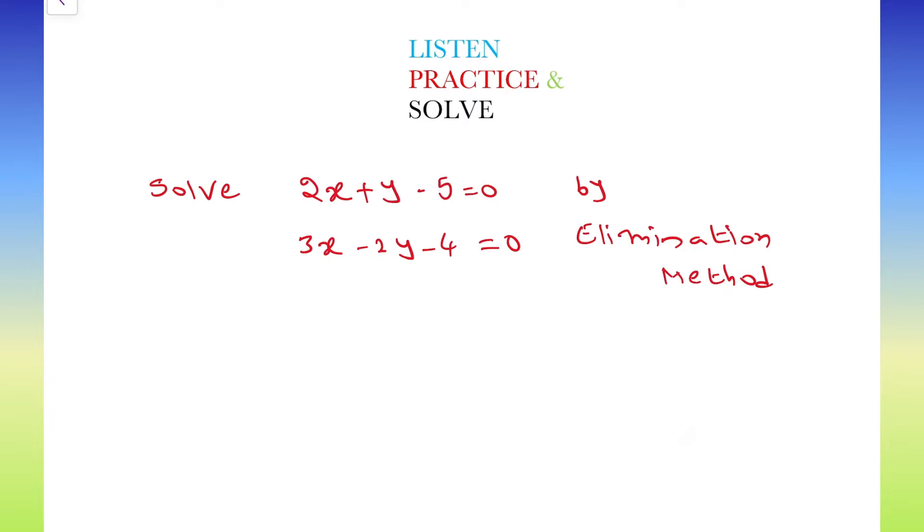The question is solve 2x plus y minus 5 equals to 0 and 3x minus 2y minus 4 equals to 0 by elimination method.